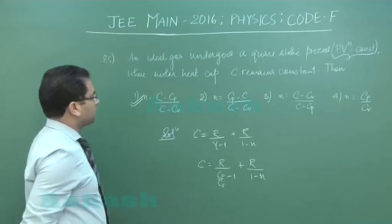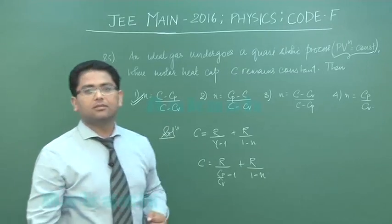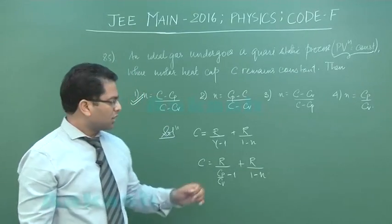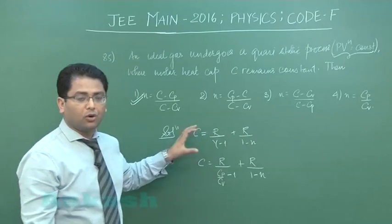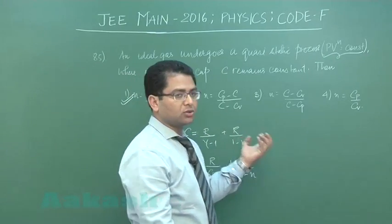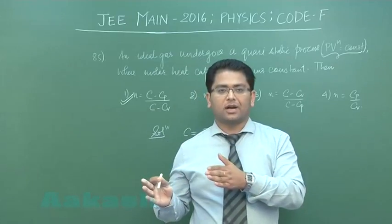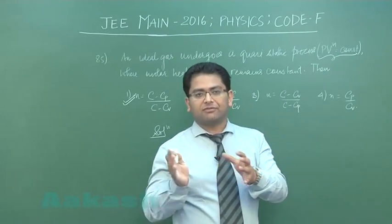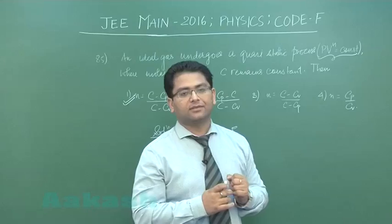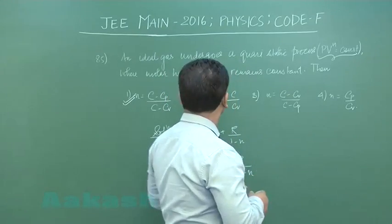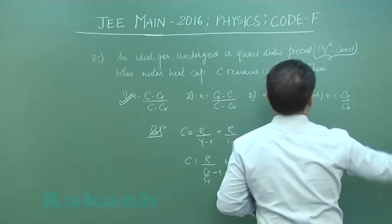You get the value of n to be C minus Cp upon C minus Cv. In order to get this fact, a nice amount of homework and pre-calculation is required. This particular question requires a thorough knowledge of thermodynamics. That was question number 85. We'll move to question number 86.